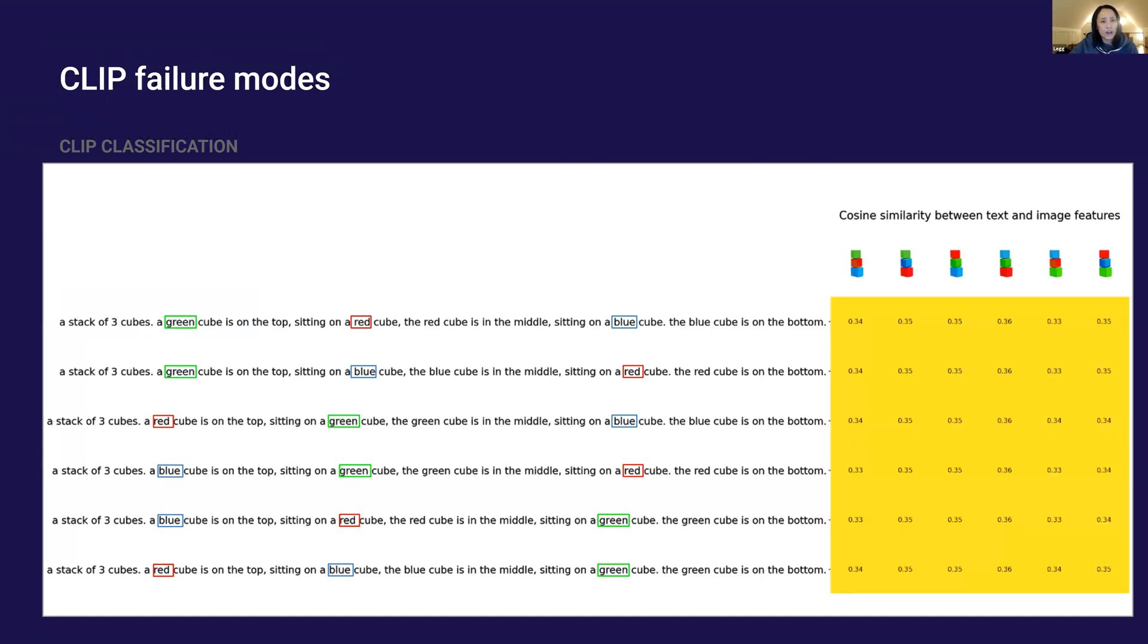But the logits predicted are actually quite even. It seems that when there are multiple entities, relations, and attributes, CLIP struggles.